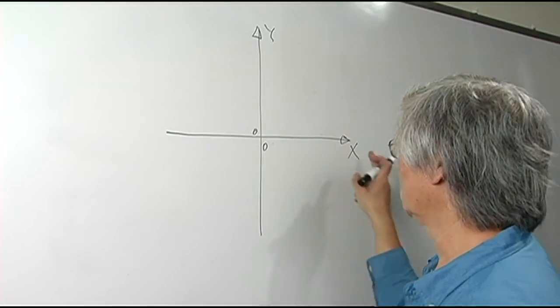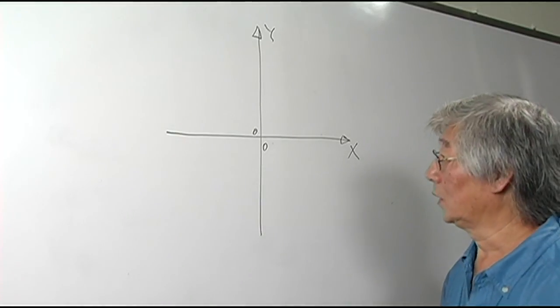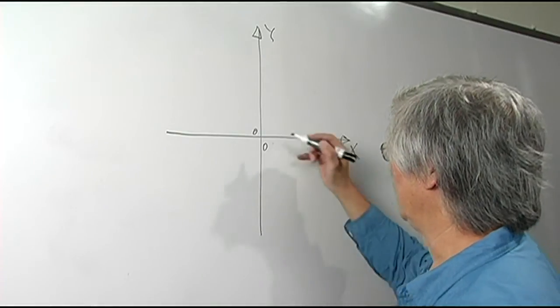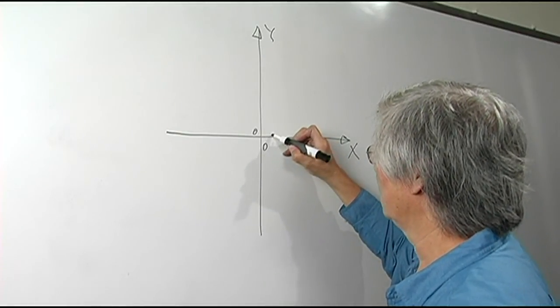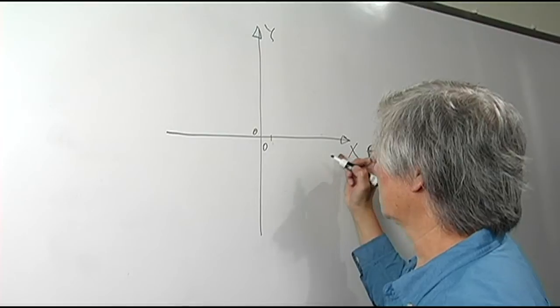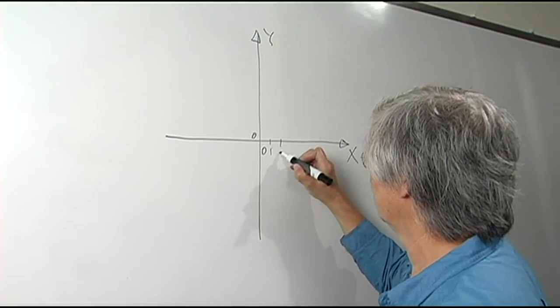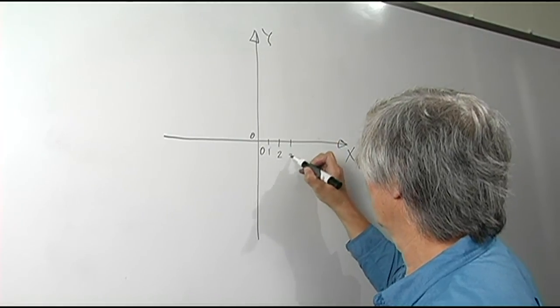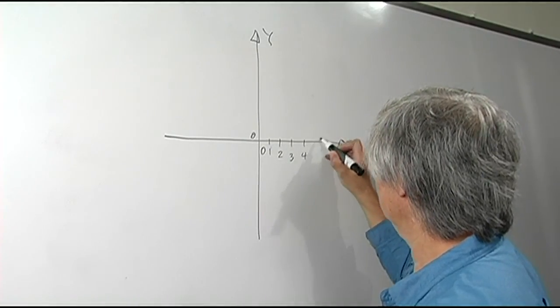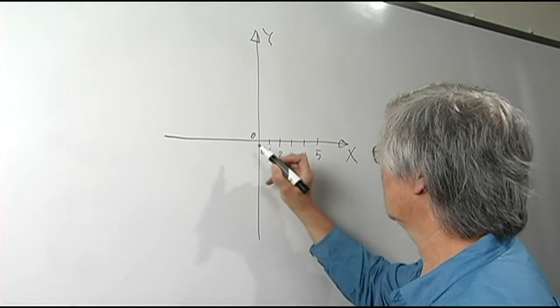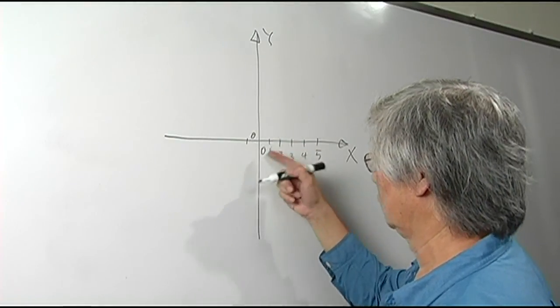We can think about these axes as a number line with positive values to the right and negative values to the left of the origin.